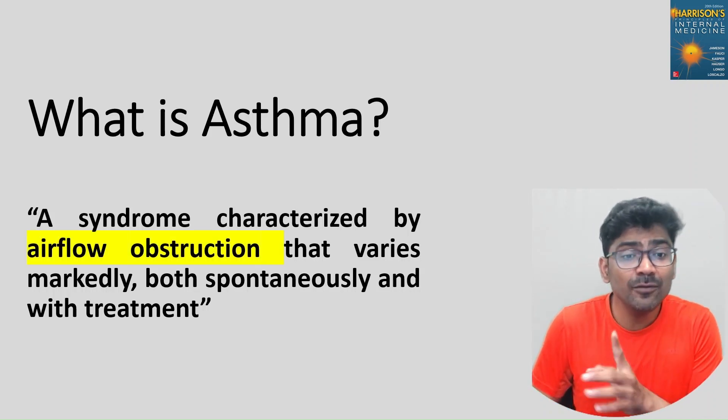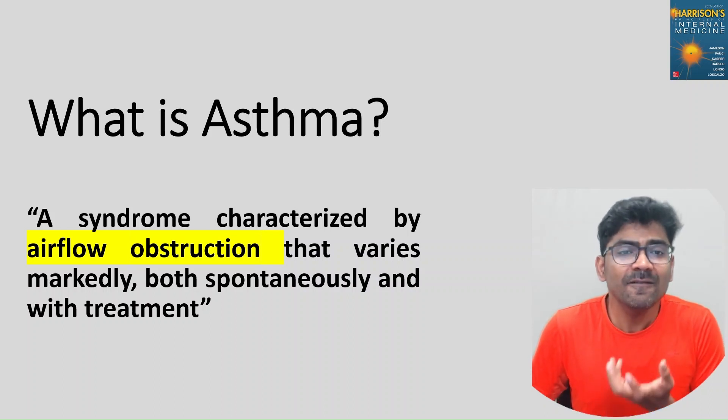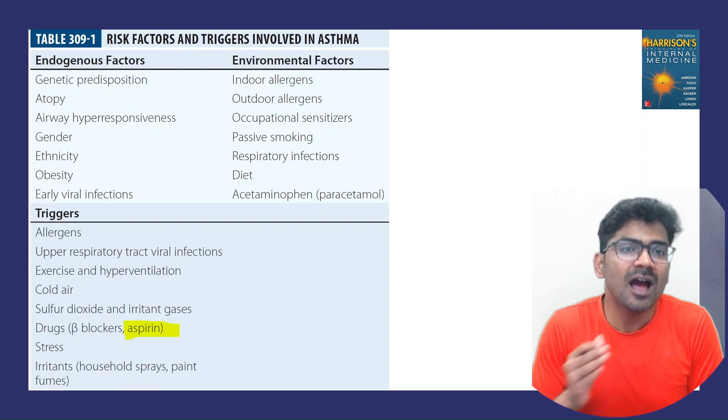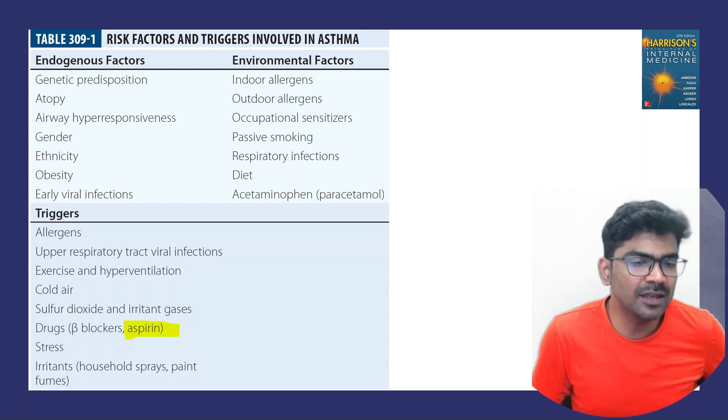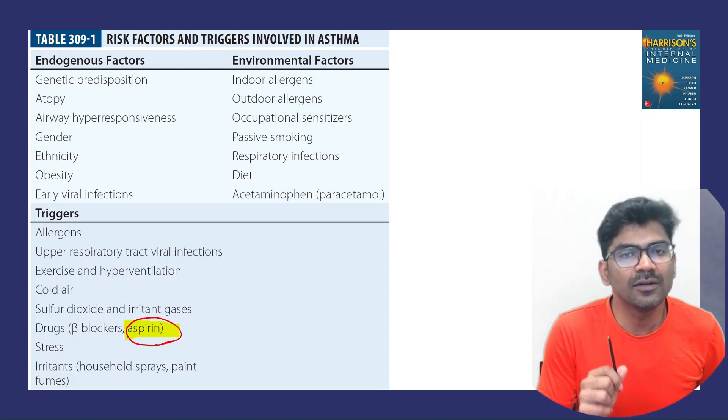There is airflow obstruction due to bronchospasm in asthma. What are the factors and triggers involved in asthma? As you can see, the table in Harrison clearly mentions aspirin as one of the triggers for asthma.